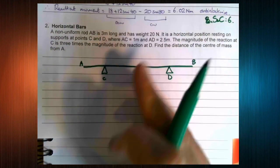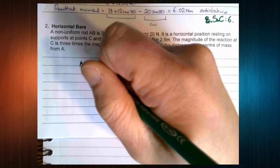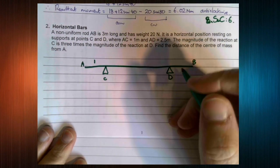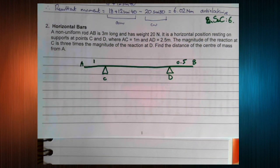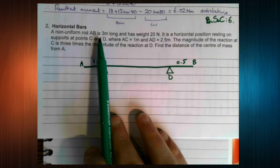AD is 2.5, so let's put D somewhere here. This distance from A to C is 1, this distance from A to D is 2.5, so this distance is 0.5. I'm labeling it that way to keep the diagram as tidy as possible, because it's very easy to end up with a lot of information on a diagram.